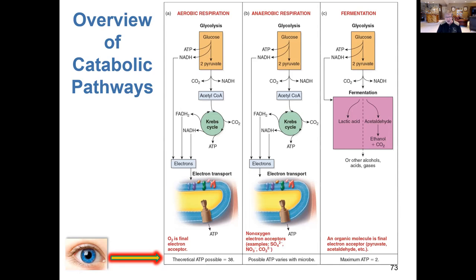In anaerobic respiration, there are other compounds that ultimately accept those electrons to form a number of byproducts. Hydrogen sulfide, for example — the rotten egg odor — is a gas produced by certain methanogens. Nitrates and nitrites are produced by different bacteria in anaerobic respiration. We'll be talking more about those sorts of bacteria coming up soon in lab when we start working on our unknowns.